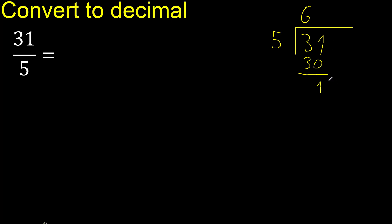There is no next digit, therefore complete. Always complete with 0 — here with a decimal point.